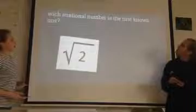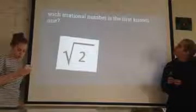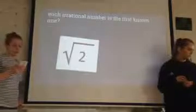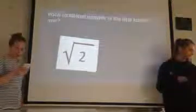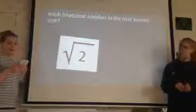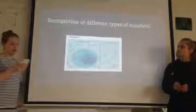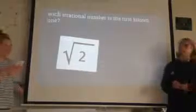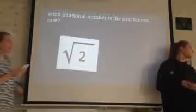Which irrational number is the first one known? It is the square root of two, according to the Pythagorean rule. Stories say that it was found by Hippasus.